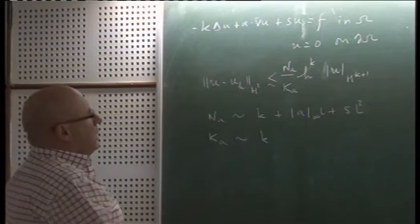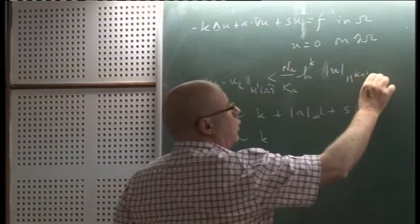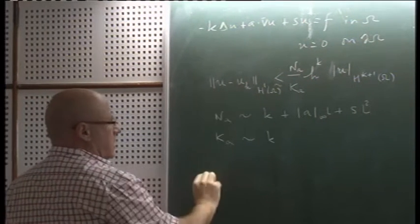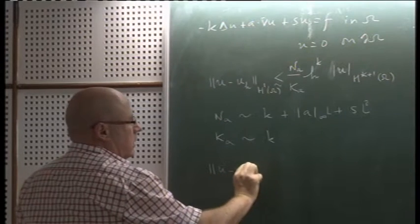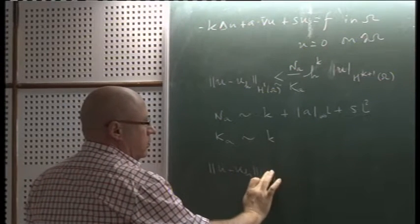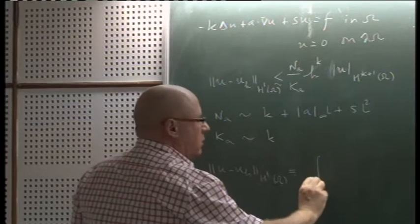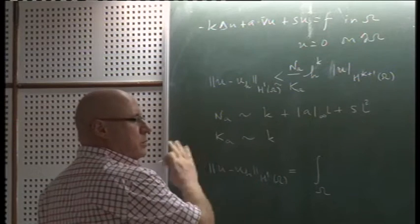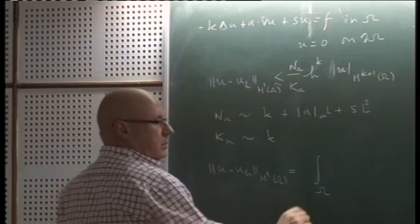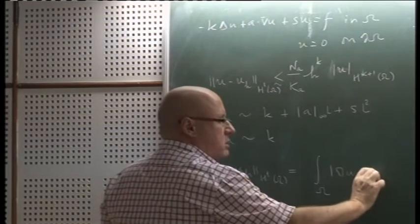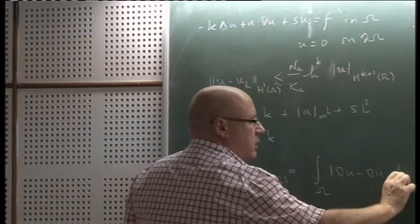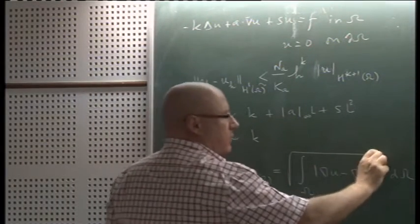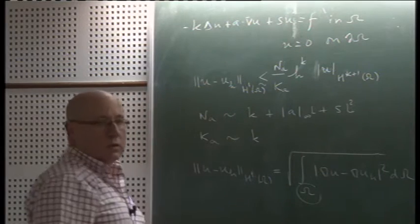One important remark is that these estimates are global in the whole computational domain omega. The H1 norm of u minus u_h is the integral over omega — essentially the integral over all the computational domain of the gradient difference, since the L2 part is controlled by the gradient part using the Poincaré inequality. So those are global estimates.